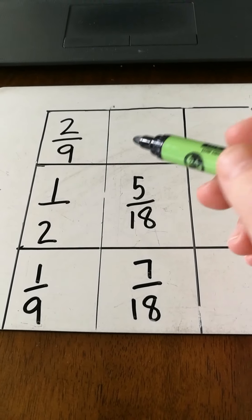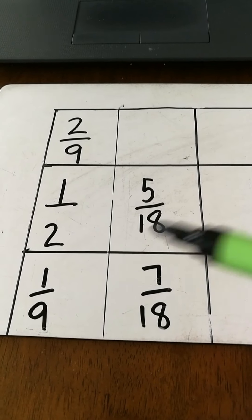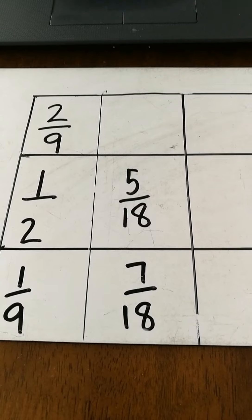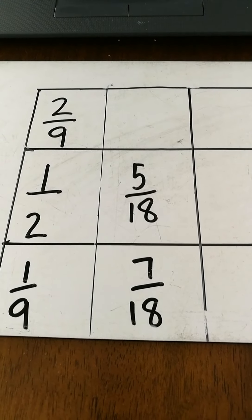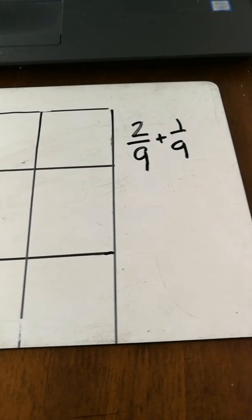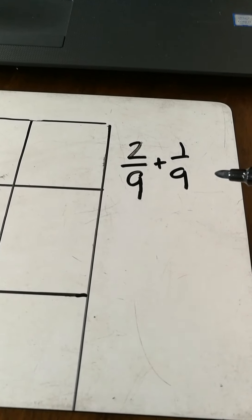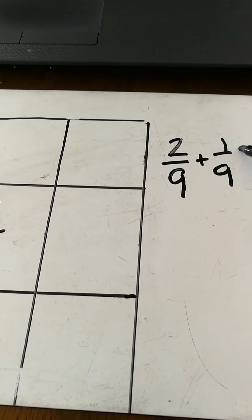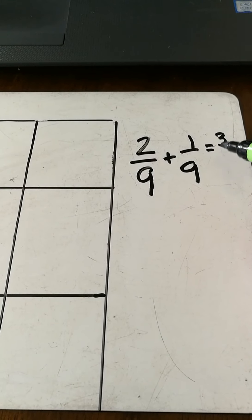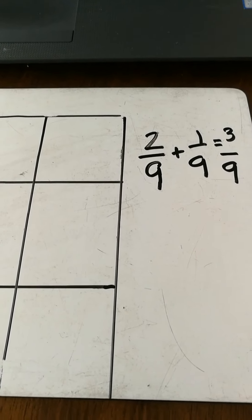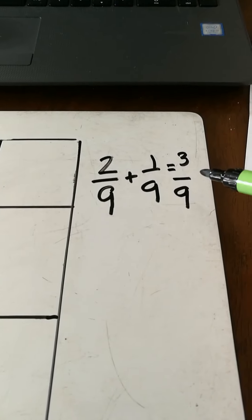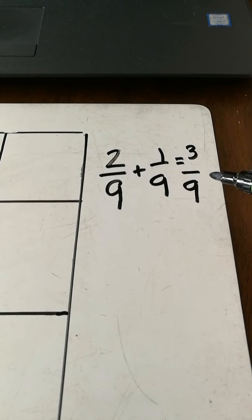I need to add up my two-ninths, add a half, add one-ninth. I'm first going to add my ninths together — two-ninths add one-ninth. This is nice and easy as they have the same denominator, so simply add your numerators. Two add one is three — three-ninths. Now I still need to add my half to that. I could go and add three-ninths and a half, but it's a little bit more difficult that way.